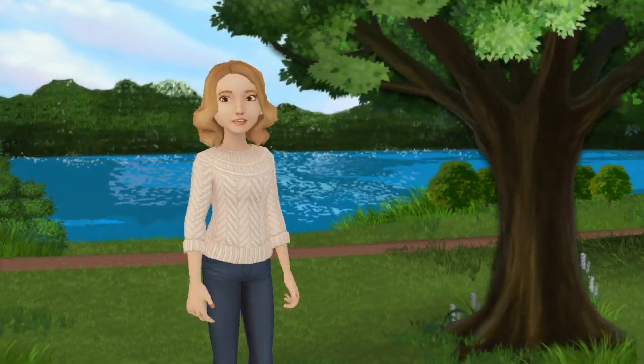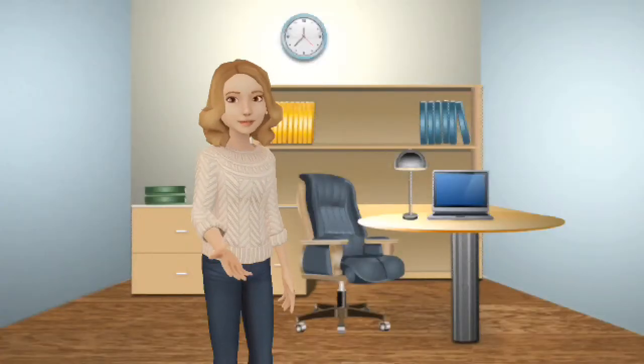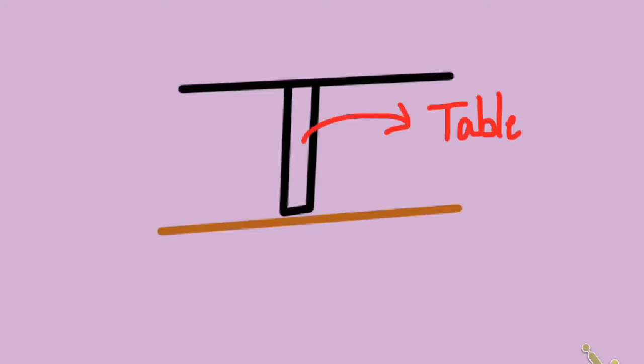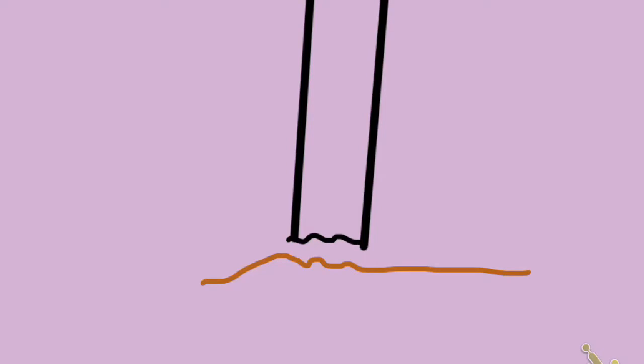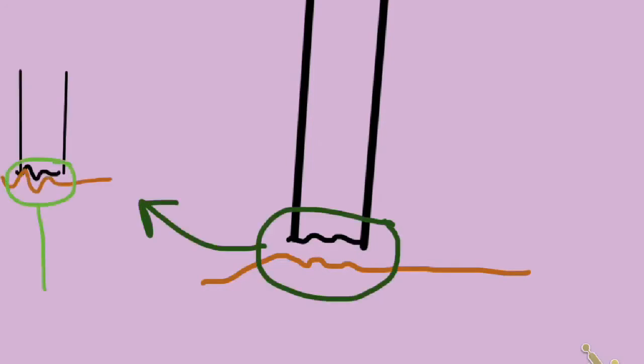Now let us see in detail why does friction occur. Let's say I want to move this table. If this is the table and this is the floor, then let us magnify the surface of contact of the table and the floor. When we magnify the table and the floor, we can see that the surface has many irregularities, and when these irregularities come together, they interlock or bind, and this creates the resistance which is the friction.